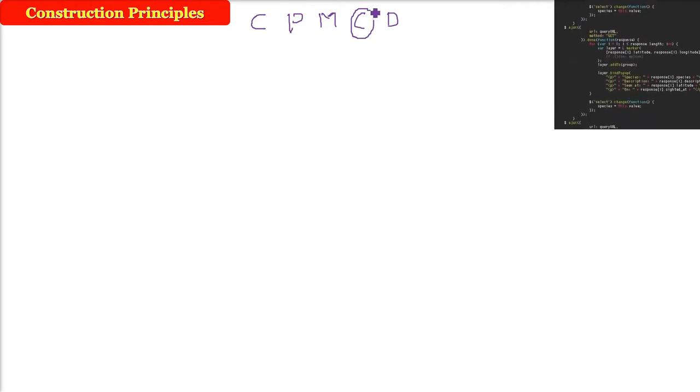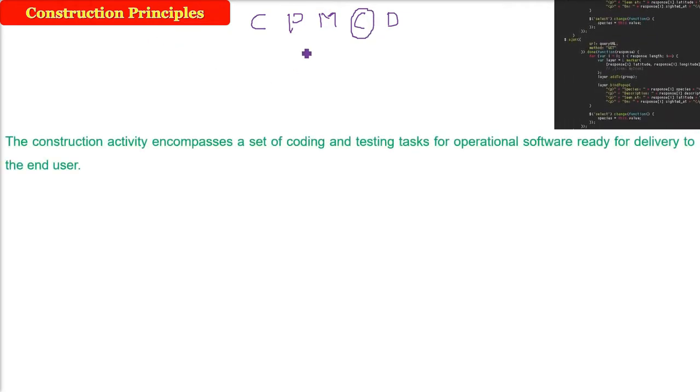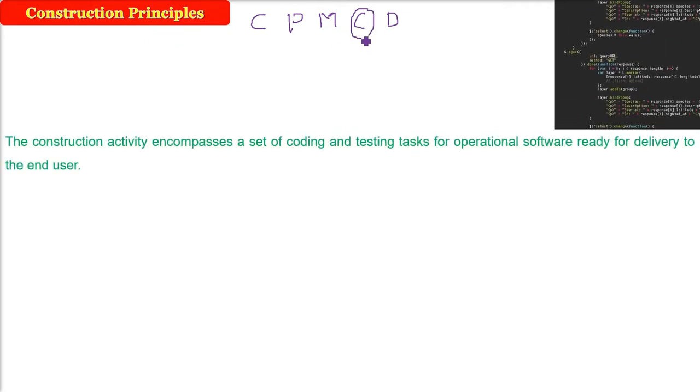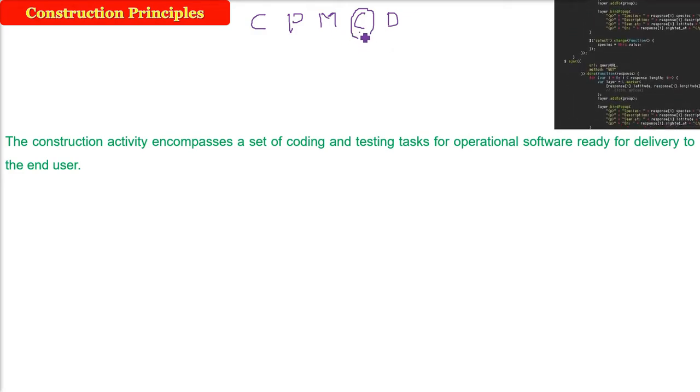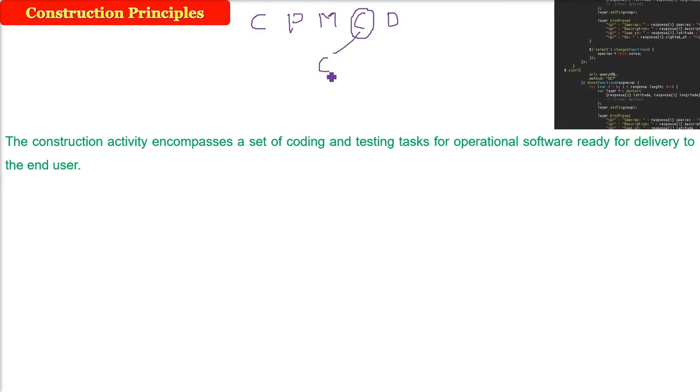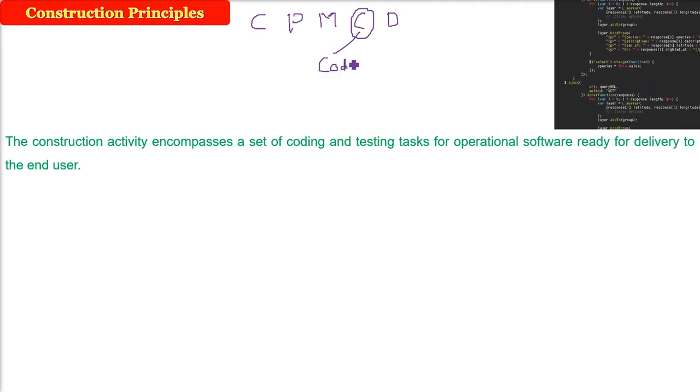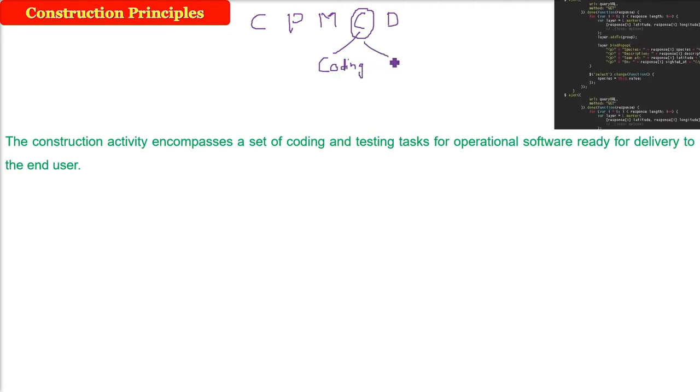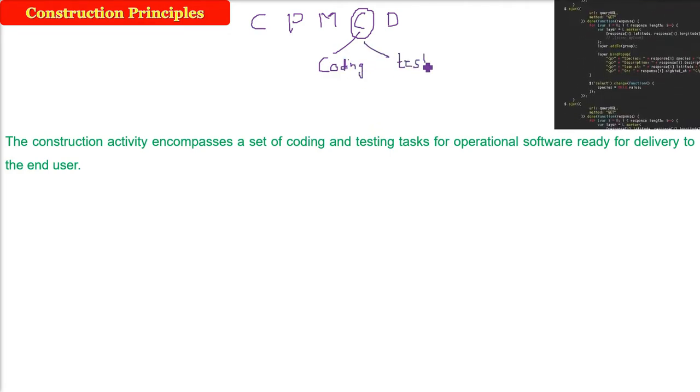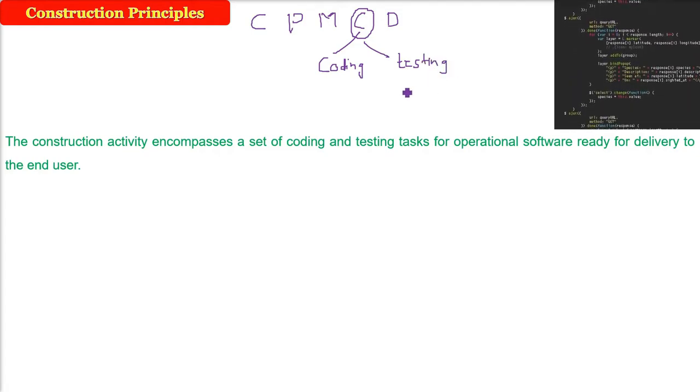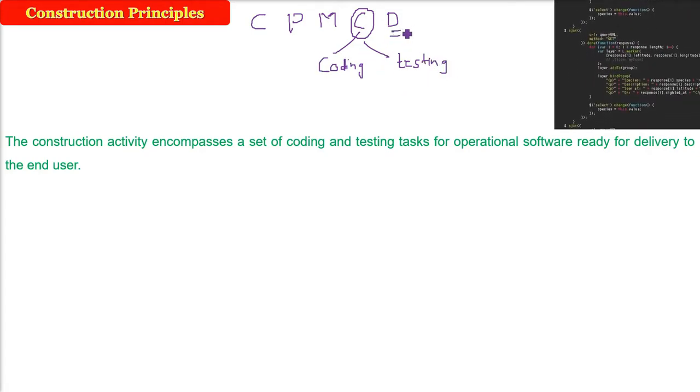In this respect, what principles should a software engineer, a person working as a professional in software industry, follow when doing coding or testing? The construction activity encompasses all the content of coding and testing.